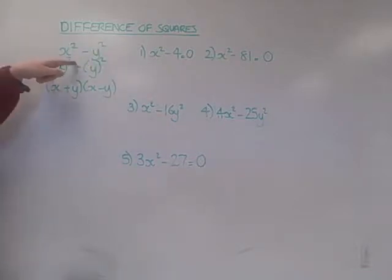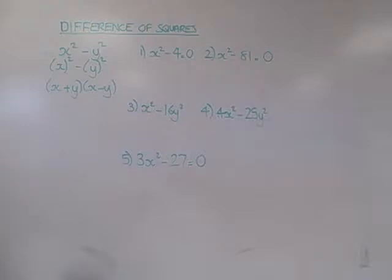Well, x² is obviously x², and y² is obviously y². Once you have it in that form, you just take the two items and put them in twice, one with a plus and one with a minus.